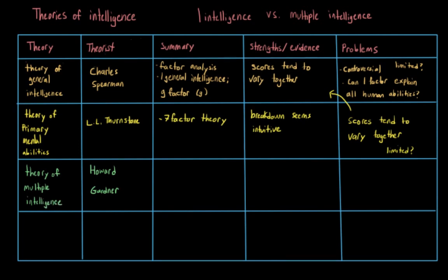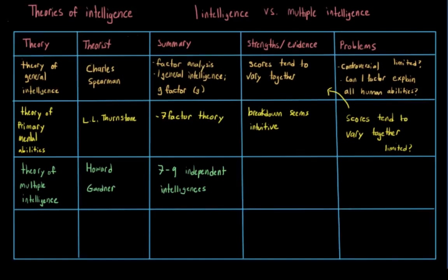Gardner divided our intelligence into seven and then nine independent intelligences — independent in that they don't rely on or depend on each other, meaning that your intelligence in one area doesn't predict your intelligence in another area. He predicted a logical-mathematical intelligence, a linguistic intelligence, a musical intelligence, a spatial intelligence, a body-kinesthetic intelligence, an intrapersonal intelligence, and an interpersonal intelligence. Later on, he added the idea of a naturalist intelligence as well as an existential intelligence.